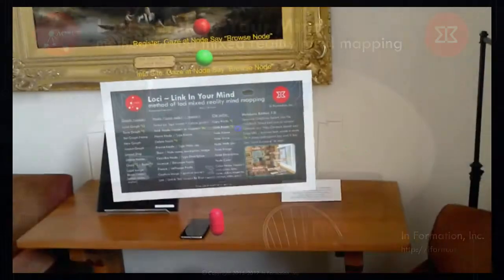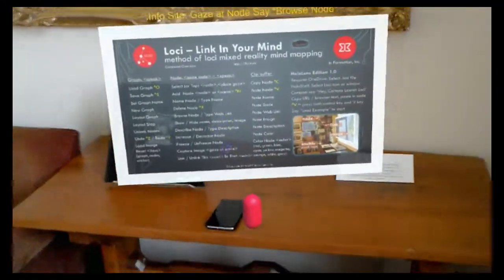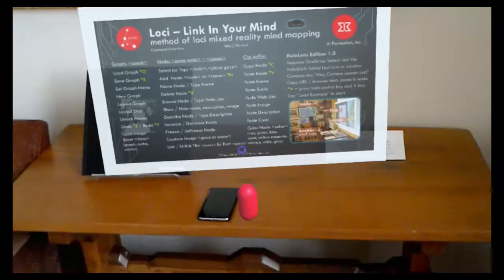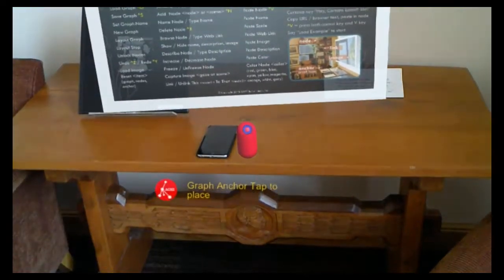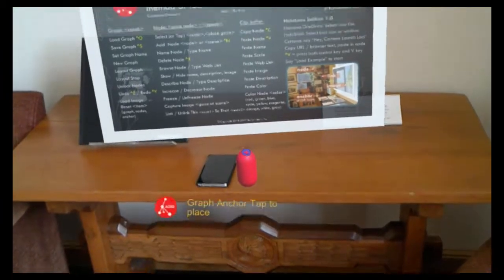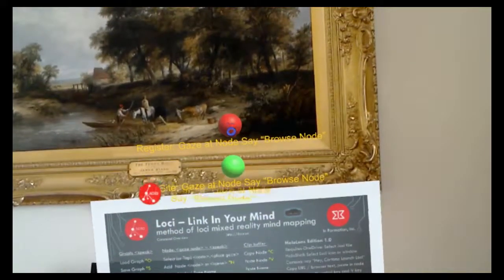This is a demonstration of the Loci system. When you first launch the Loci system, you'll have an anchor which holds the base of all the graph, and two nodes that show up.